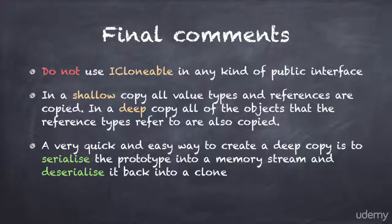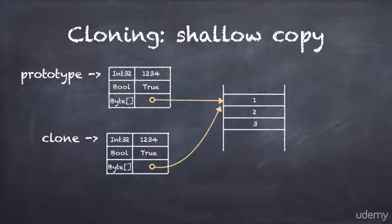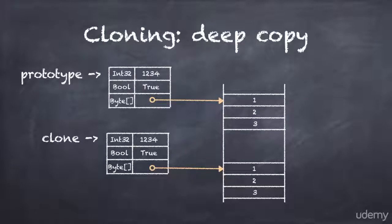Here's the difference between a shallow copy and a deep copy. In a shallow copy, all value types and references are copied. The clone contains copies of each value type member, but all of the reference type members will be shared between the clone and the prototype. A deep copy goes one step further: the value types and references are copied, but also all of the objects that the reference types refer to. This creates a deep copy of the original prototype that does not share any objects with it.